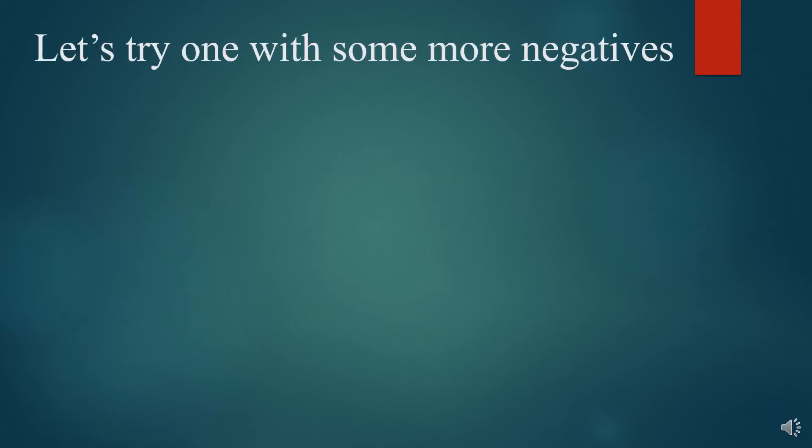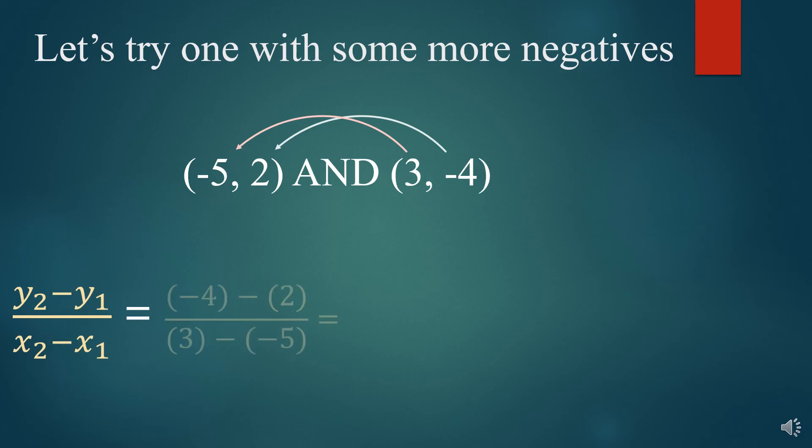Now, we're going to try one more with some negatives. Let's add a few more negatives in there to give you a little bit of different problems. And so let's say we had negative 5 and 2 and 3 and negative 4. Here's our slope formula. We're going to first subtract the y's in a backwards fashion, negative 4 minus 2. And then we're going to subtract the x2 and the x1, 3 minus negative 5.